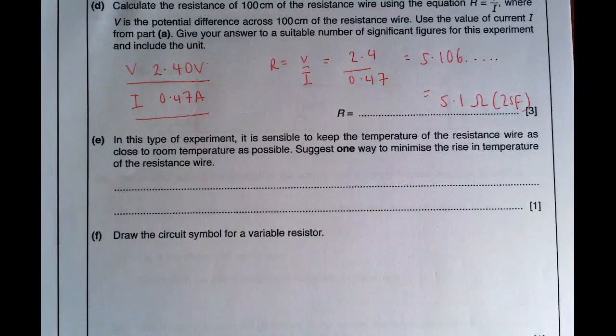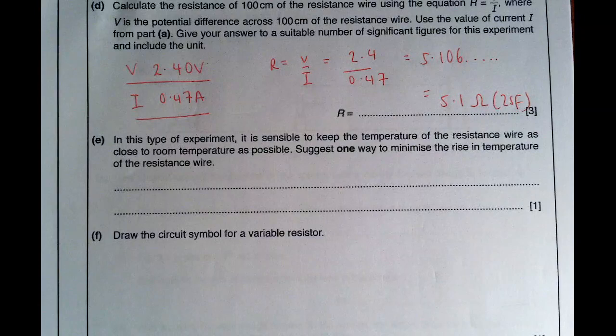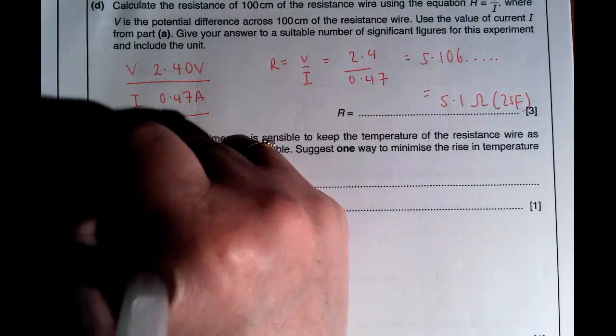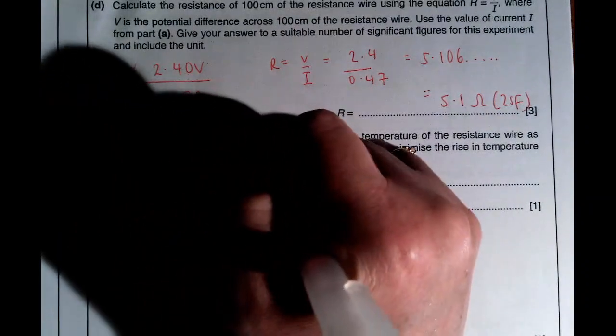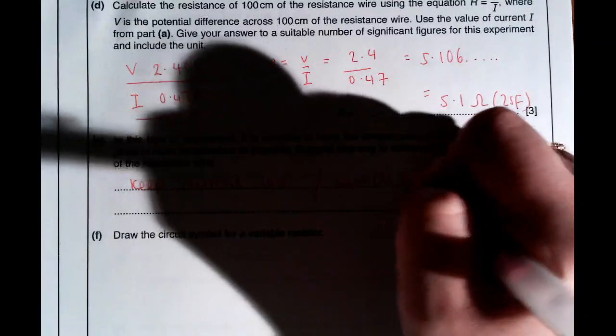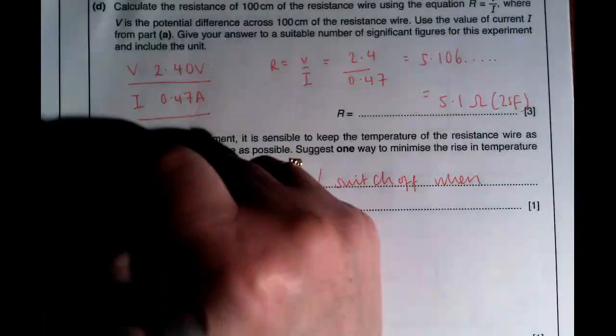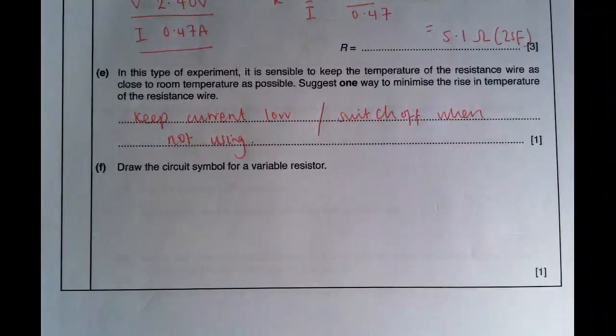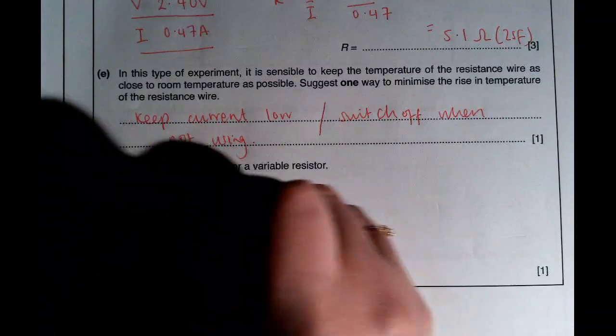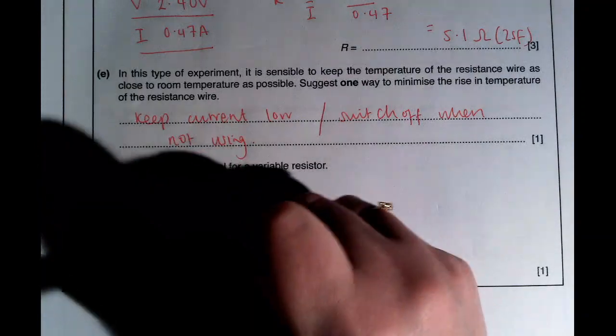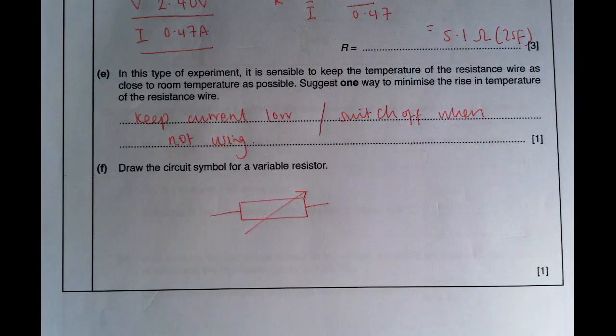It is sensible to keep the temperature as close to room temperature as possible. How can we minimise the temperature rise? You can either have said keep the current low or switch off when not using. Then last bit of this one, the circuit symbol for a variable resistor. You draw a normal resistor, which is just a rectangle, and then an arrow through it to show that it is variable.